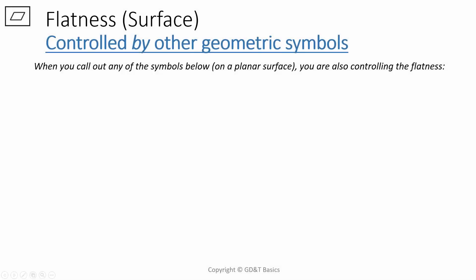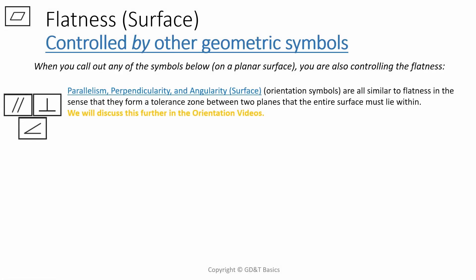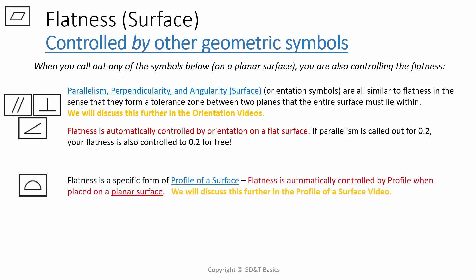There are several other geometric callouts and symbols that control flatness automatically. Parallelism, perpendicularity, and angularity when applied to a surface are all similar to flatness in the sense that they form a tolerance zone between two planes that the entire surface must lie within. These are known as the orientation symbols, and we will be discussing them individually in future videos. Flatness is automatically controlled by orientation on a flat surface. For instance, if parallelism is called for 0.2, your flatness is also controlled to 0.2 for free. It is automatically done. Flatness is also a specific form of profile of a surface. When profile is called out on a planar surface, flatness is automatically controlled to the same tolerance. We will discuss profile further in a future video.